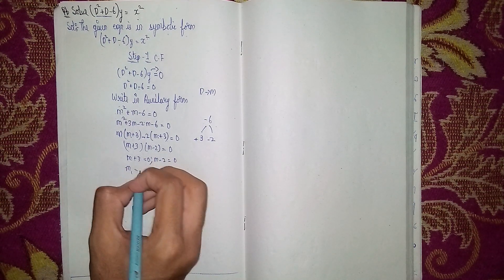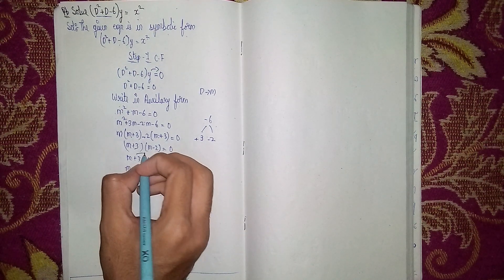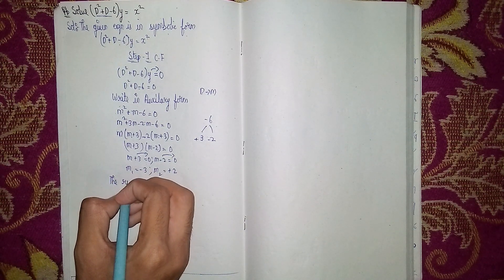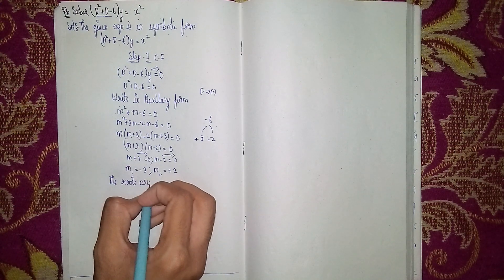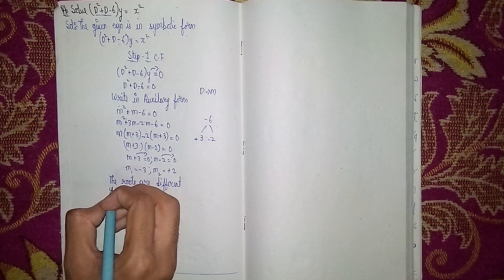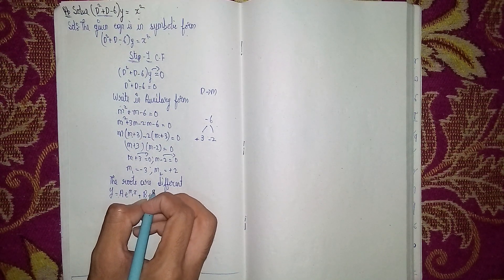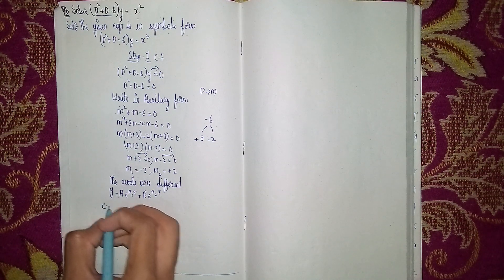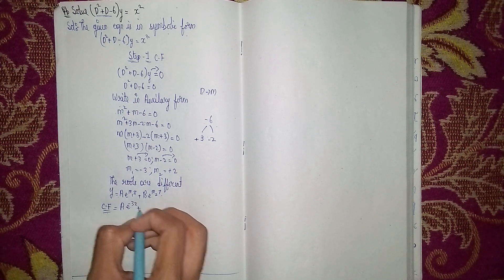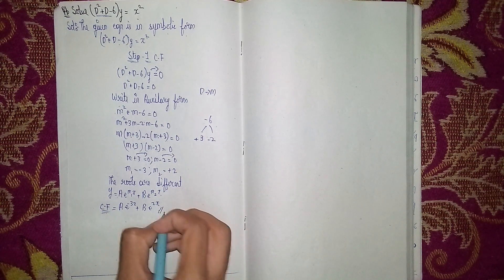So m + 3 = 0 and m - 2 = 0, giving m₁ = -3 and m₂ = +2. The roots are different. When the roots are different, the complementary function is y = A·e^(m₁x) + B·e^(m₂x). So CF = A·e^(-3x) + B·e^(2x).